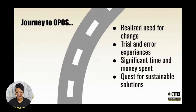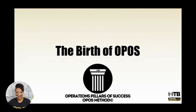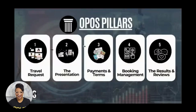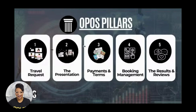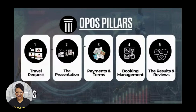OPUS was really born from you all asking for help — how to be more efficient, how to launch and operate the business, and ultimately how to market it. There are five pillars to OPUS: the travel request pillar, which deals with taking and accepting requests and presenting group trips; pillar two covers payments and terms; pillar three is about the legality of accepting payments; pillar four is booking management and client communication; and pillar five is monitoring your results and your reputation.